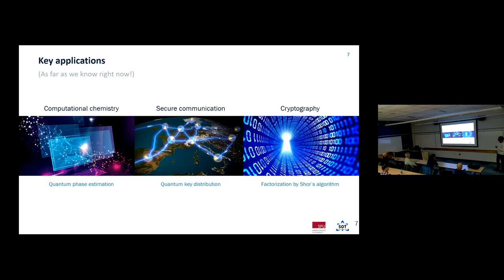The final application I want to talk about is cryptography. This was one of the very first useful applications of a quantum algorithm. Quantum computing was first proposed in the 80s, and about a decade later the first useful algorithm was proposed — Shor's algorithm for factoring large numbers. The difficulty of factoring large numbers underlies current internet security protocols called RSA. Someone with a quantum computer would be able to decrypt online communication, and even in 1994 when this was first proposed, that was recognized to be a very big deal.